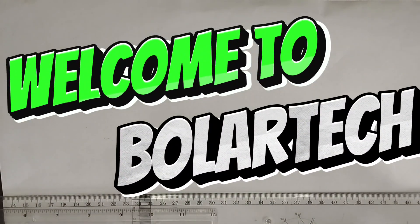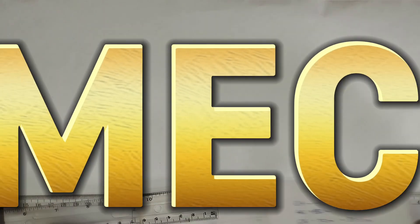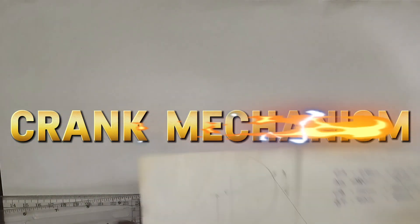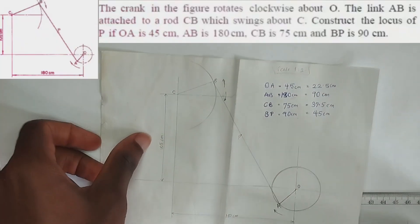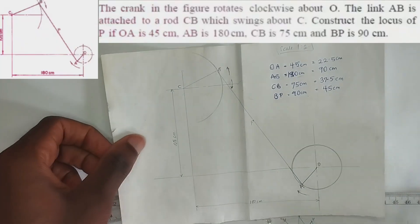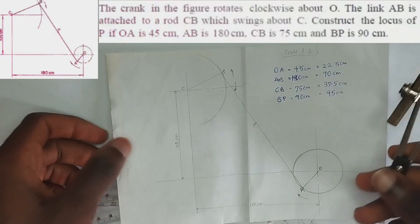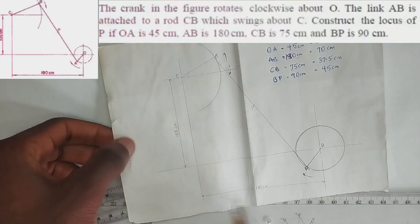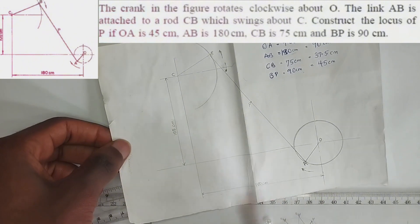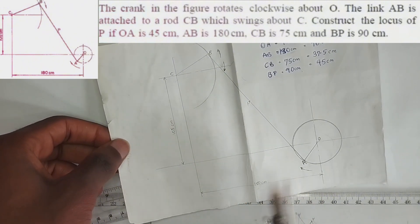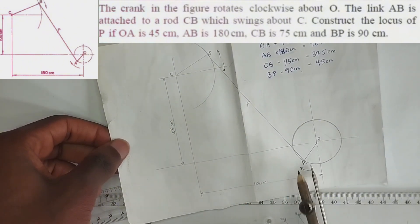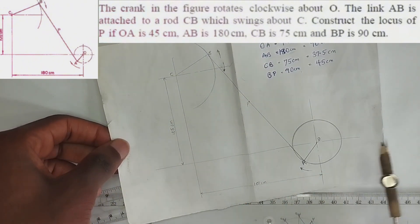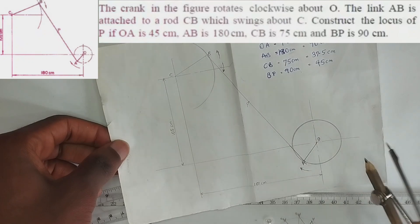Hello guys, welcome to my channel. In this video we have been given a question on crank mechanism and we have been told to draw the locus of point P. For this question we are going to be making use of a scale of one to two — that is, at any point where we see 80 centimeters, we are going to be using 90 centimeters.